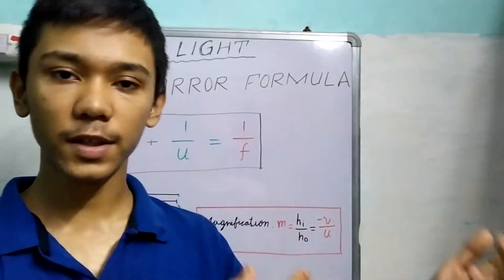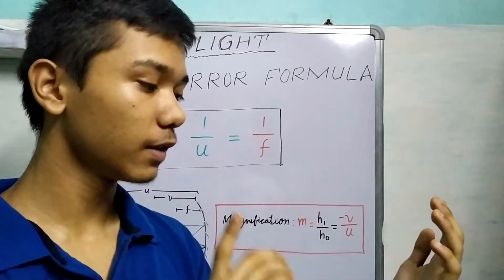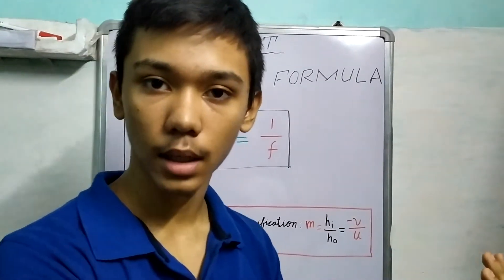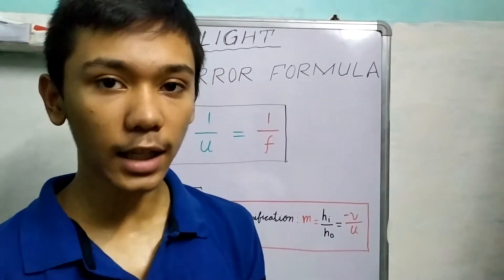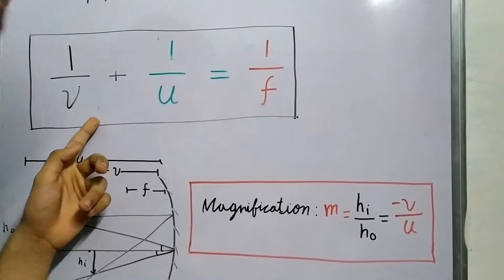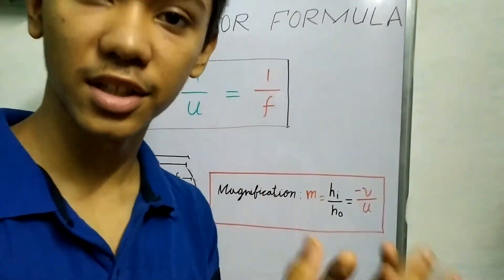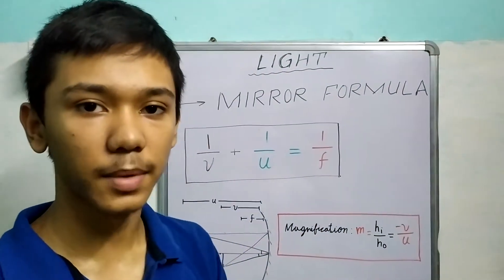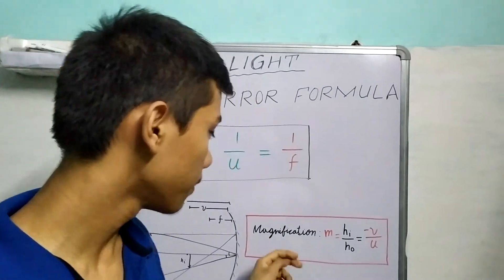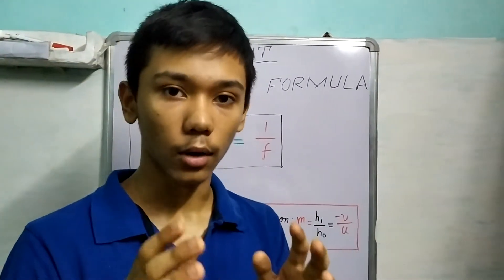In previous videos we studied how images are formed when we have an object at specific places. In this video we will try to mathematically relate how the image distance, the object distance, and the focal length are related with each other, and we will study another important part called magnification of an image.